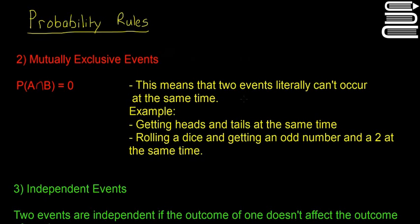Welcome back to our second video on probability rules. This time we're going to go over rules two and three. The first one we're going to look at is mutually exclusive events. That sounds sort of complicated, but it just means two events that literally can't occur at the same time.